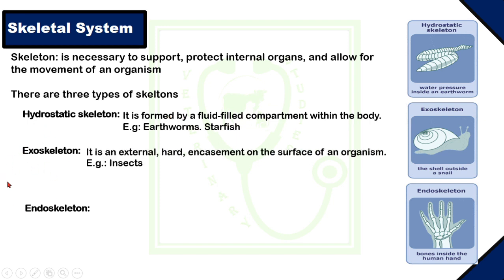Exoskeleton. Exo means outer. It is the skeleton which is found at the outer parts of an animal, known as the exoskeleton. Exoskeleton is an external hard encasement on the surface of an organism. Exoskeleton is found in insects such as housefly, ants, ticks, etc.